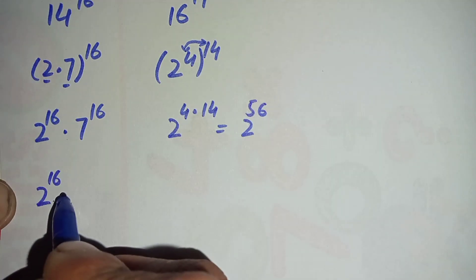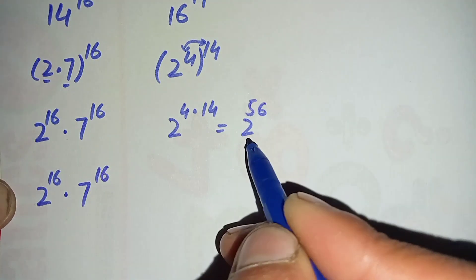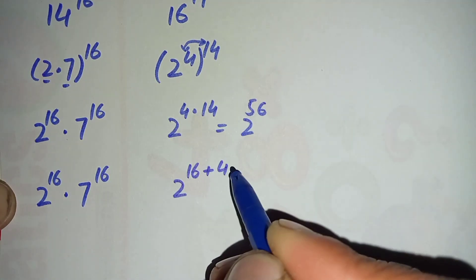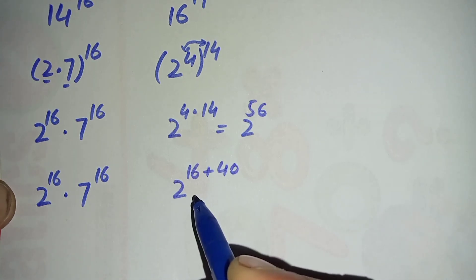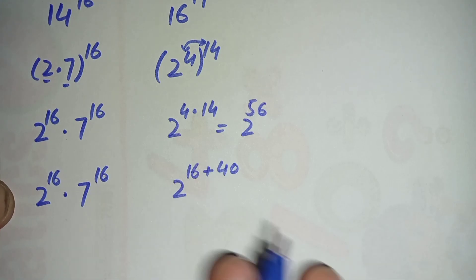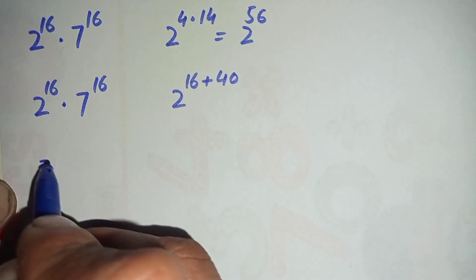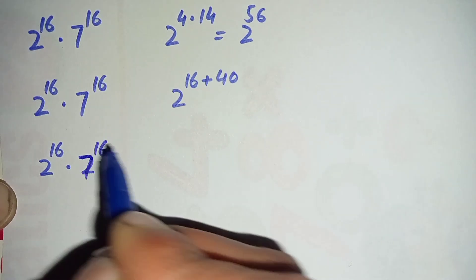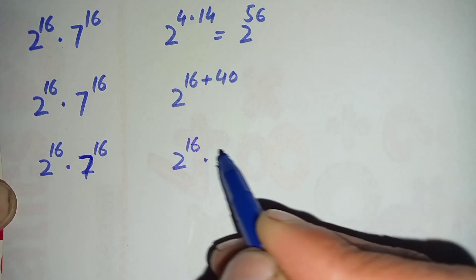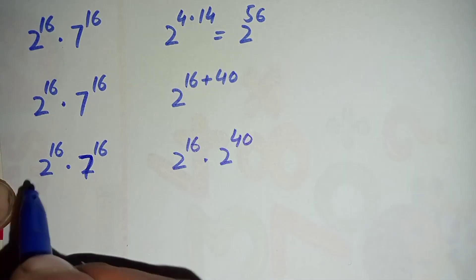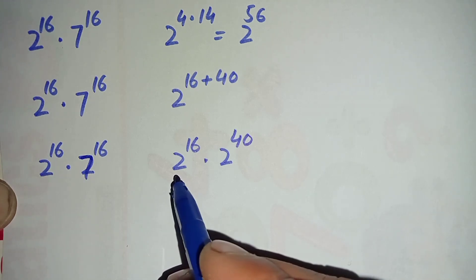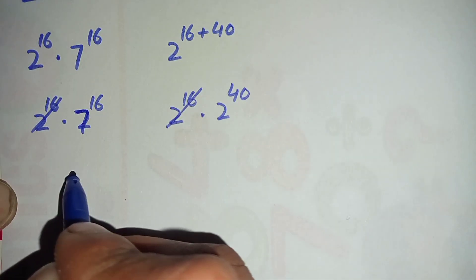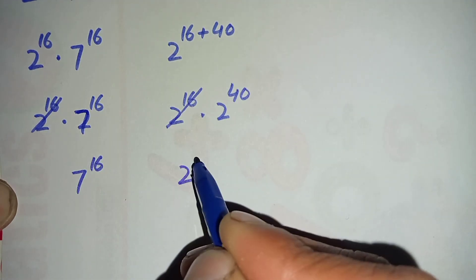We have 2 raised to power 16 times 7 raised to power 16 on the left side. We can rewrite 2 raised to power 56 as 2 raised to power 16 plus 40. Using the exponential property, this becomes 2 raised to power 16 times 2 raised to power 40. Since 2 raised to power 16 appears on both sides, we cancel it, leaving us to compare 7 raised to power 16 and 2 raised to power 40.